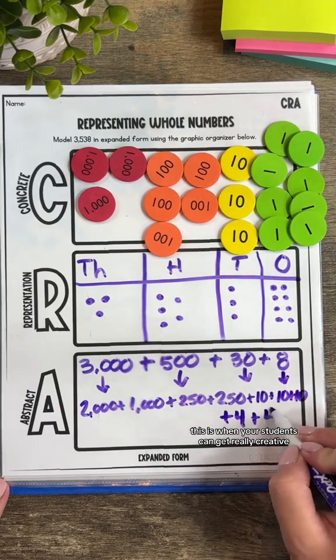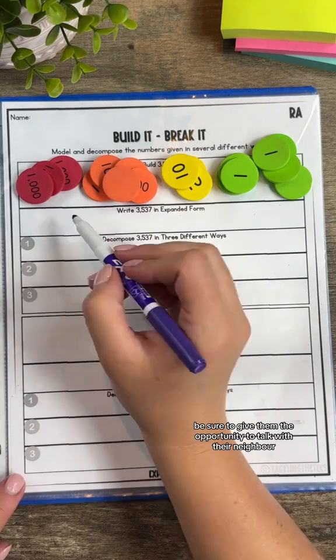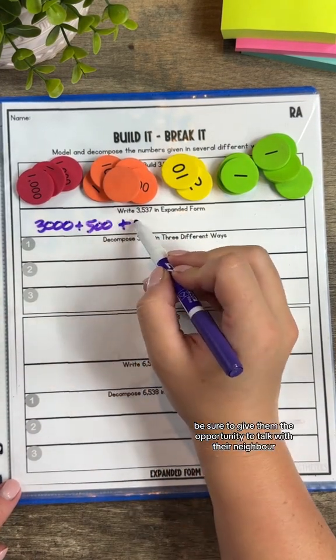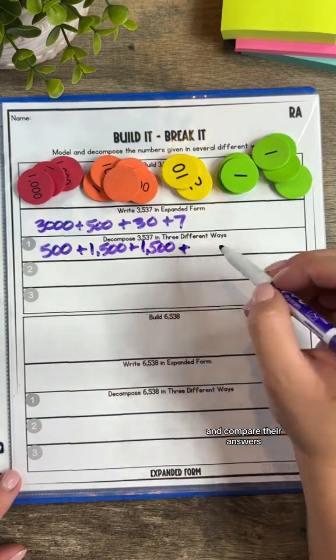This is when your students can get really creative when decomposing numbers by place value. Be sure to give them the opportunity to talk with their neighbor and see how they were able to maybe decompose it in a different way and compare their answers.